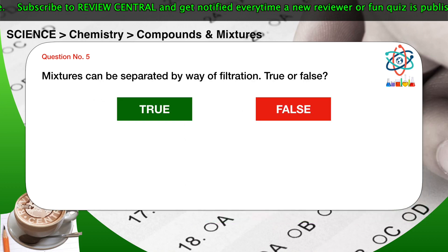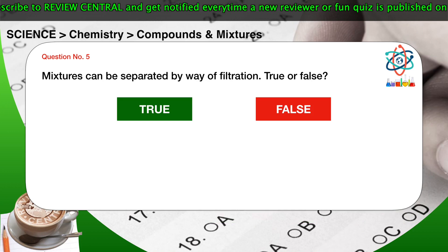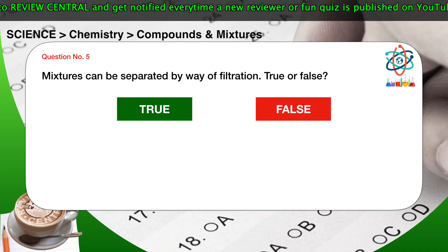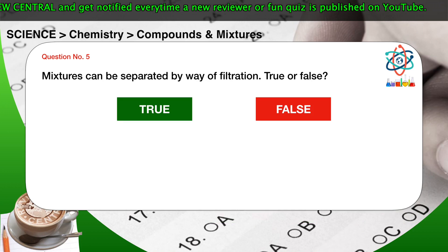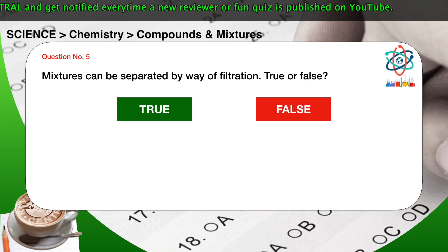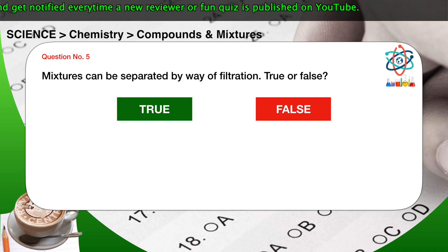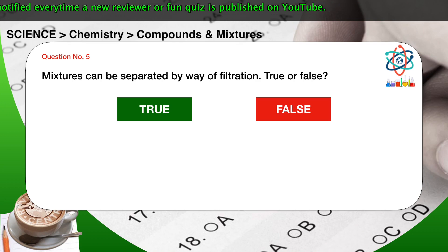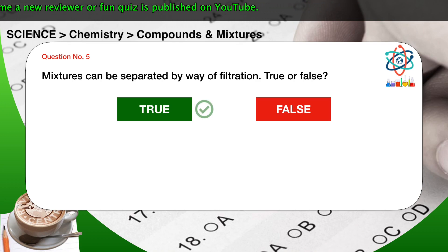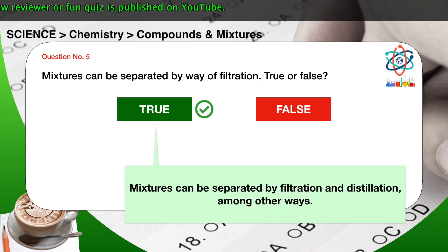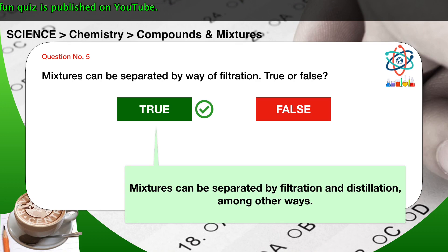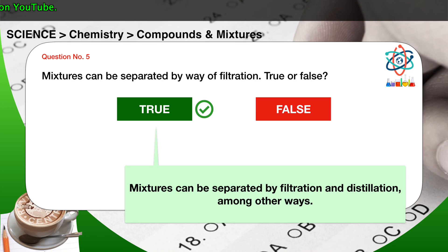Question number five: mixtures can be separated by way of filtration — true or false? The correct answer is true. Mixtures can be separated by filtration and distillation, among other ways.